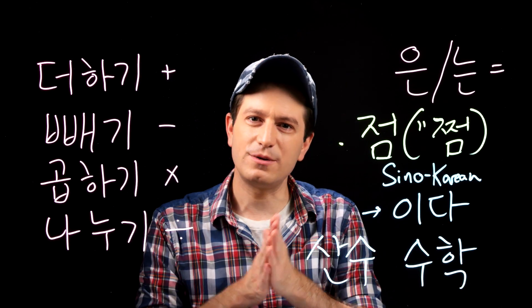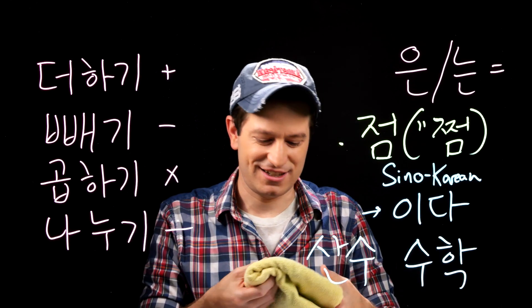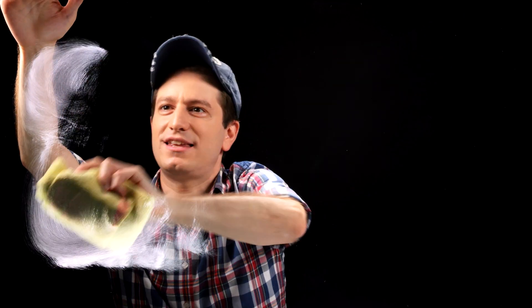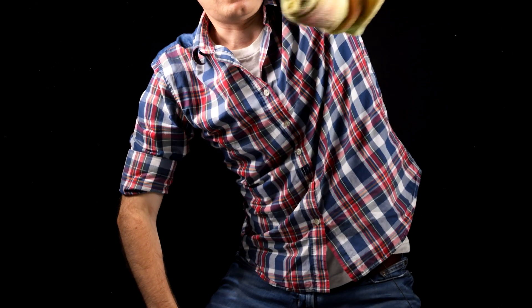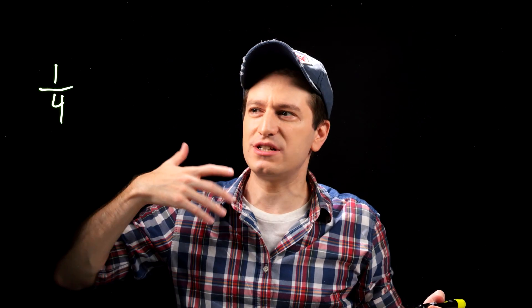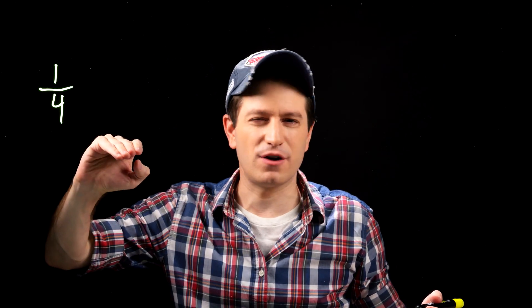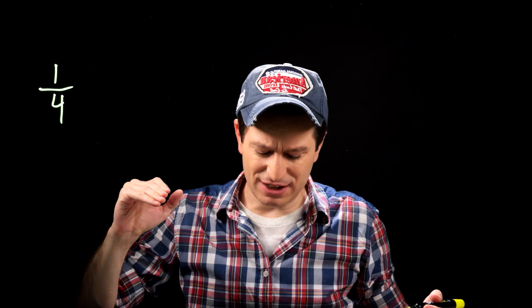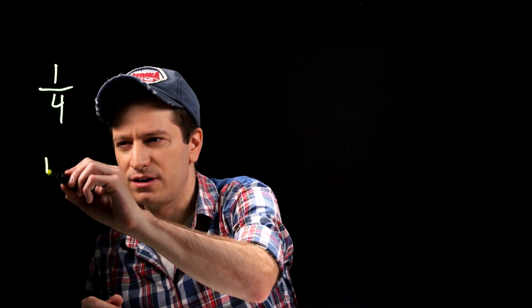Let's clear the board and talk about fractions. Remember in elementary school you'd do math and they'd give you M&Ms to practice with, and then you'd eat them when finished. The teacher didn't really care — they were just glad you were paying attention. So in Korean, you're actually going to say fractions starting from the bottom, and the way you say it uses the word 분. 분 means a part or a portion of something. So in English we say 'one fourth,' but in Korean you say 'four portions, and of those, one.'